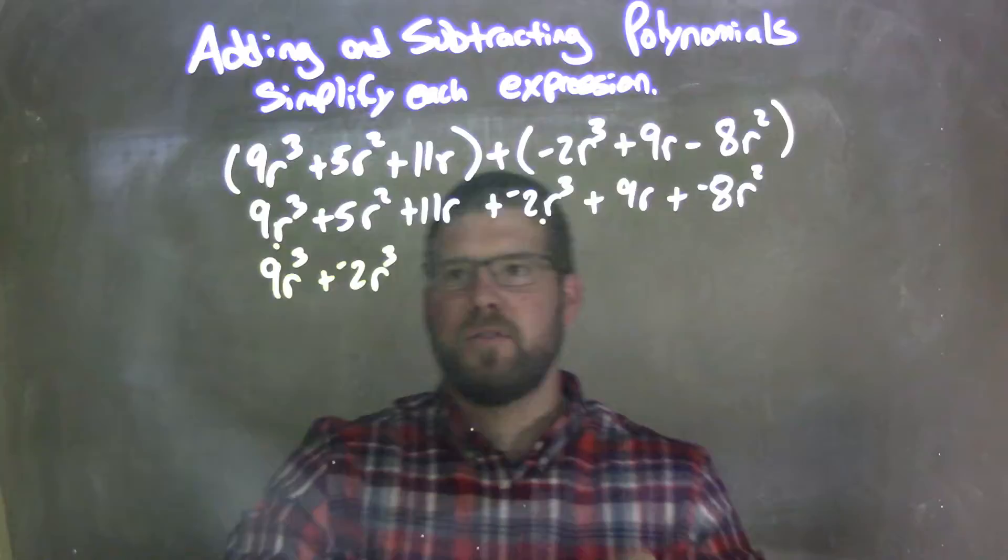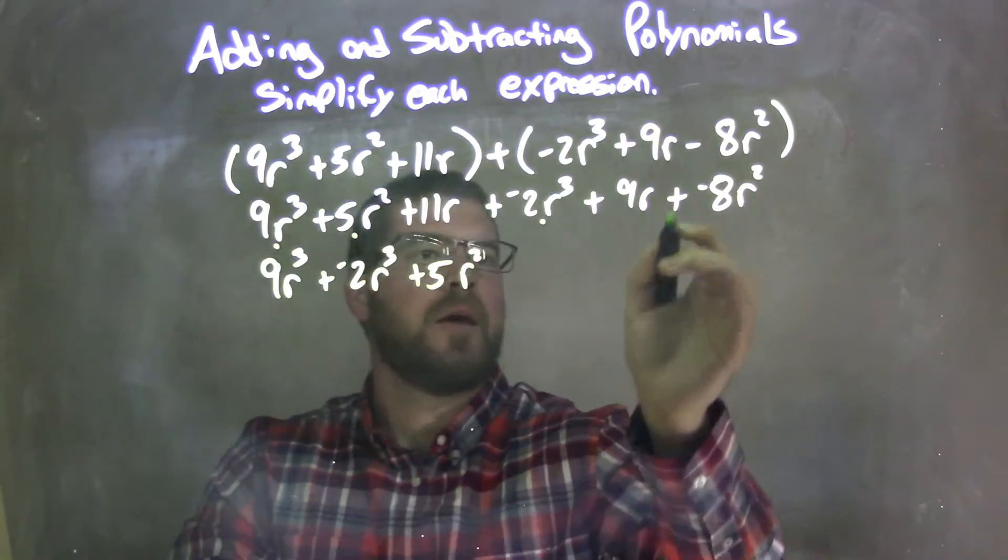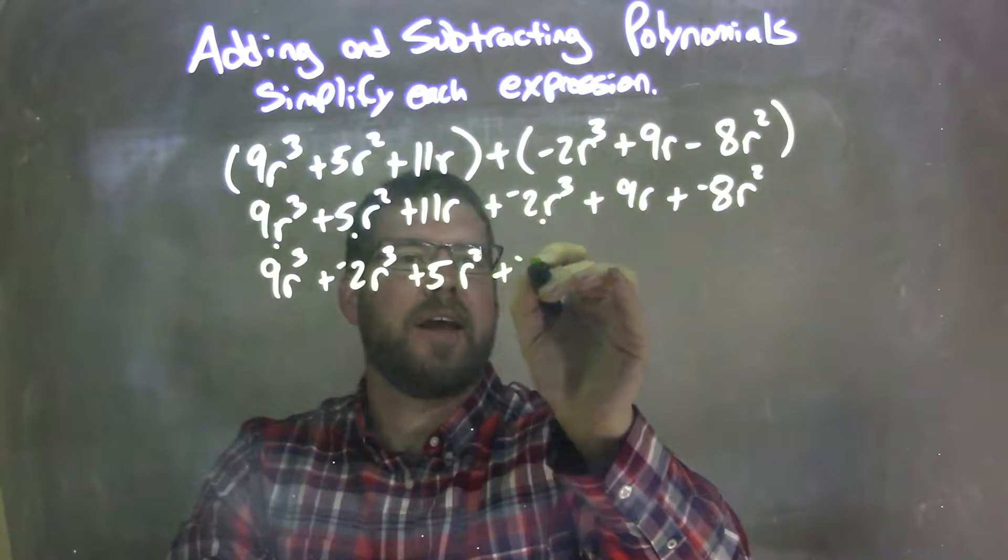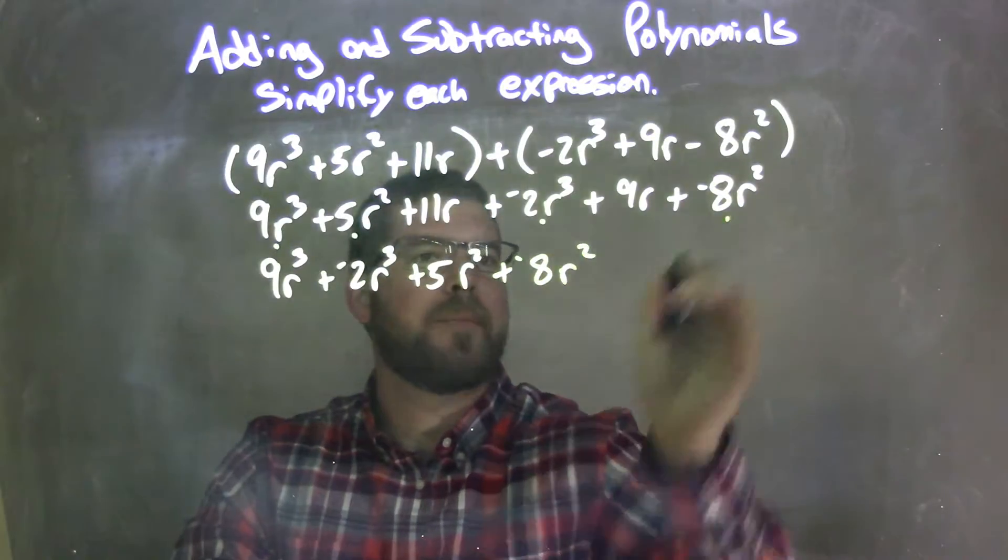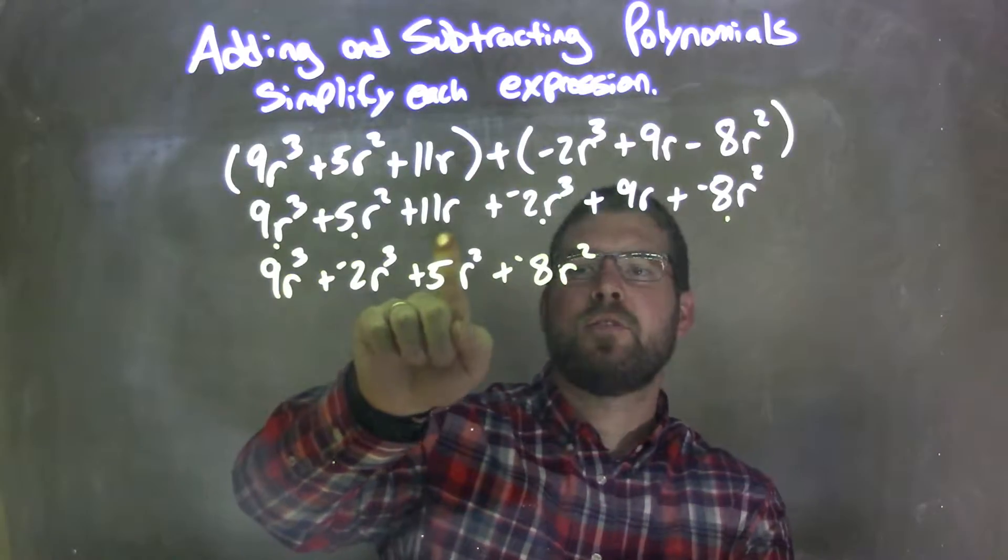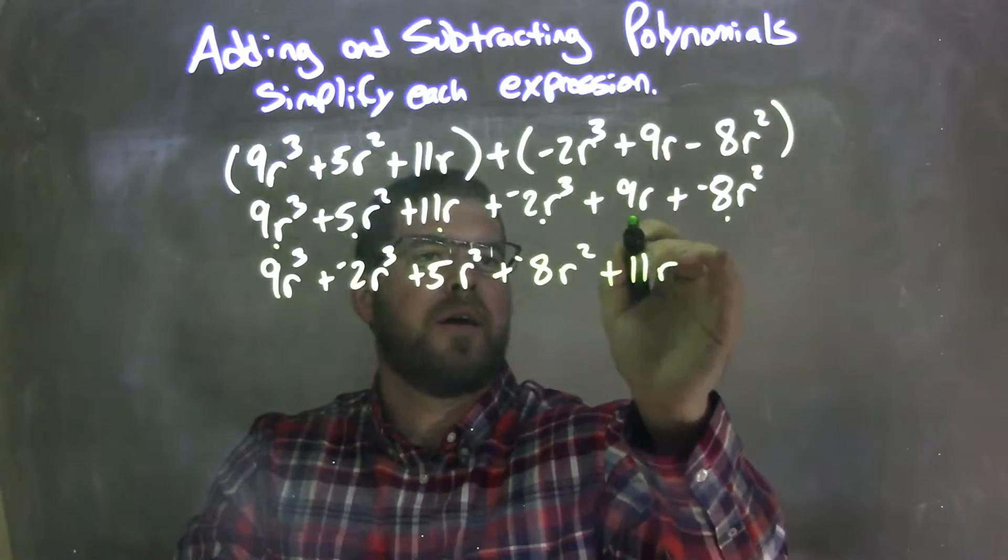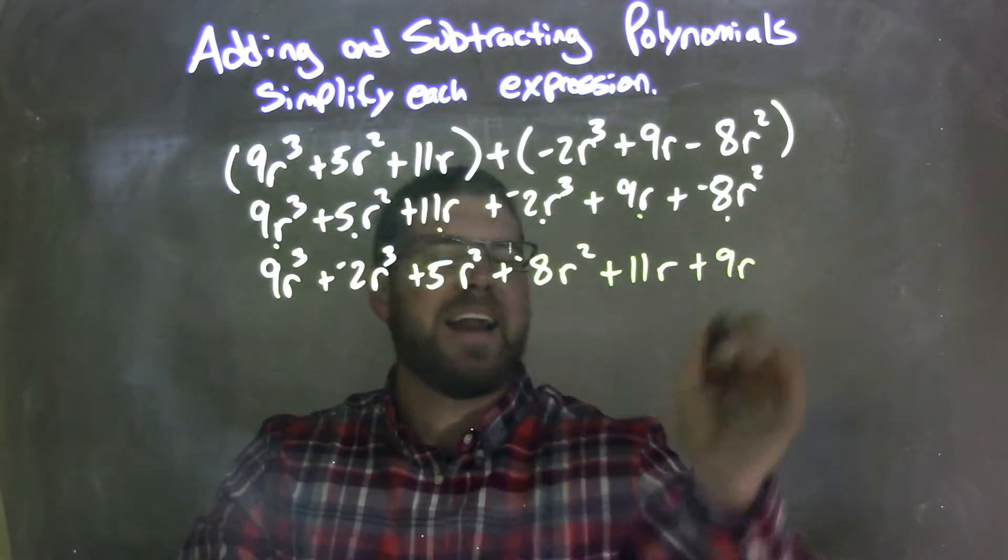Next highest degree is the second power, so let's bring down 5r² right there, and the other second power is plus a negative 8r² right there. And from there, I have my r's left, there's no more squared power, so it's just r to the first power. So I have 11r right there, and then plus 9r.